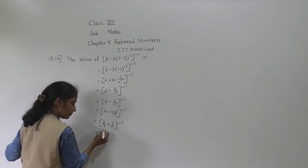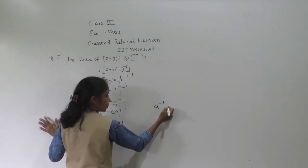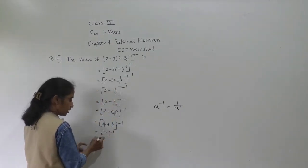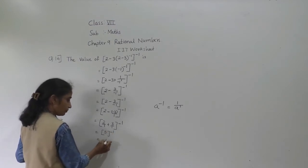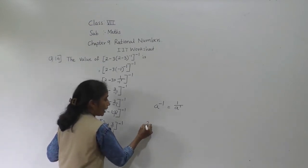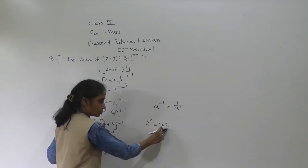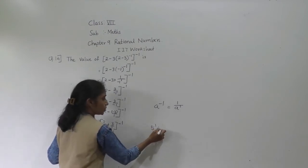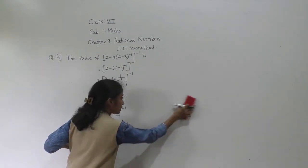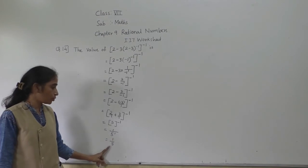So any number raised to minus 1 means 1 upon A raised to 1. Similarly, 5 raised to minus 1 means 1 upon 5 raised to 1, which equals 1 upon 5. Because 5 raised to 1 means just 5 — one time. You will learn more about this in exponents and powers. So the answer is 1 upon 5.